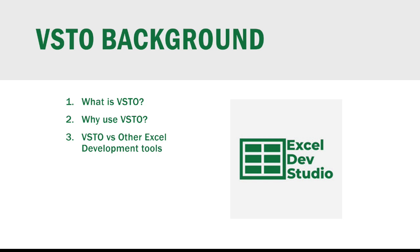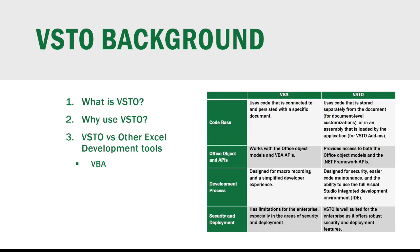Now, let's compare VSTO to other Excel development tools. The most comparable tool is Visual Basic for Applications, or VBA. VBA is a programming language for Office applications, including Excel. The table on the right highlights the differences between VBA and VSTO. Looking at the code base, VBA uses code that is connected to and persisted with a specific document. VSTO uses code that is stored separately from any document. For both document-level customization and add-in solutions, the code is stored in an assembly — partially compiled .NET code. For document-level customization, the assembly loads when the file is opened. For add-ins, the assembly loads when the application starts.